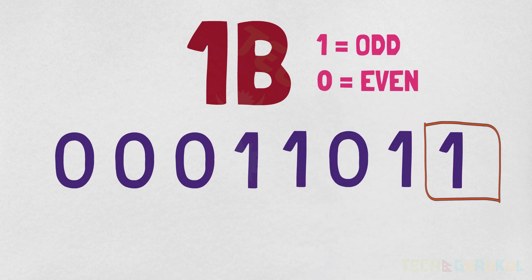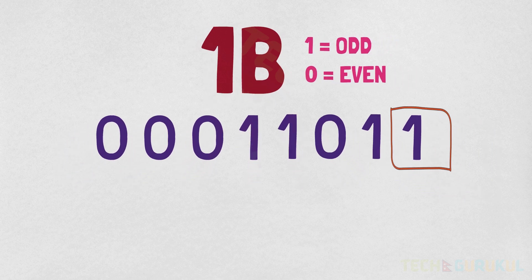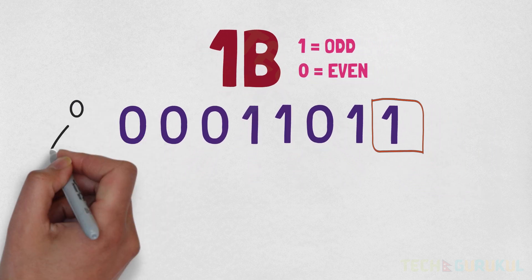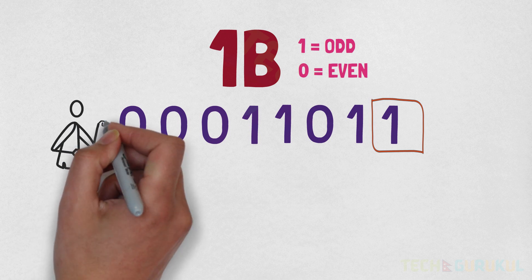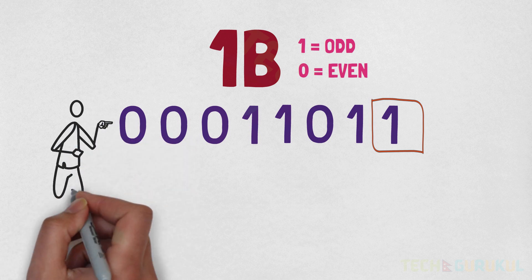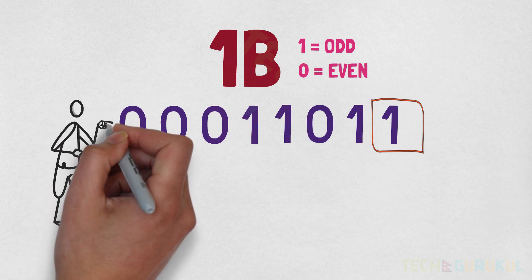This is how we check odd or even: we look at the last digit. The binary of 1B is 0001 1011. We then perform a right shift operation.